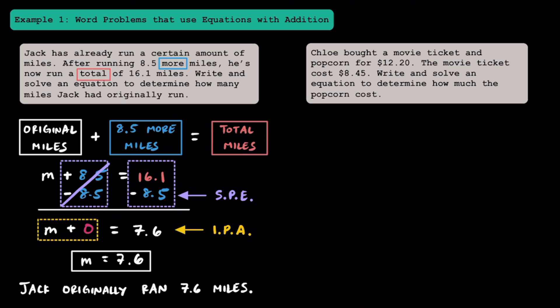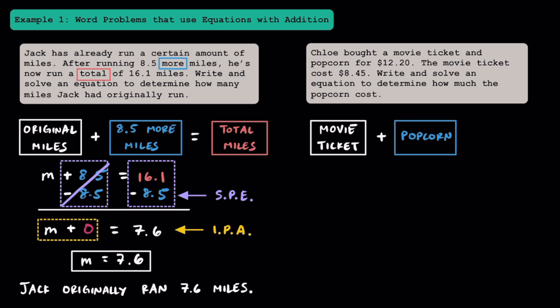In the next problem, Chloe bought a movie ticket and popcorn for $12.20. The movie ticket cost $8.45. Write and solve an equation to determine how much the popcorn cost. Let's start by writing a model. Part of the money Chloe spent was from the movie ticket, and besides the movie ticket she also spent money on popcorn, so we're going to add those two together. Adding the cost of the movie ticket to the cost of the popcorn will give the total amount Chloe spent, which is $12.20.